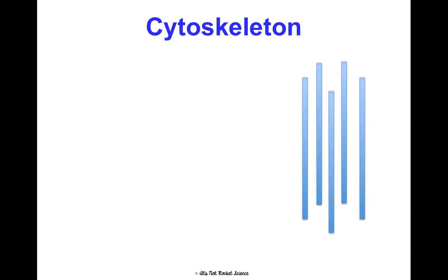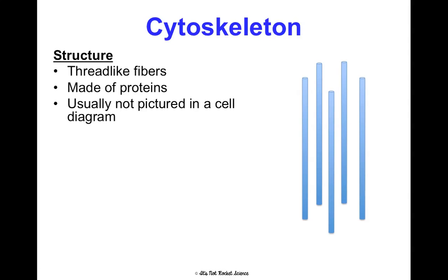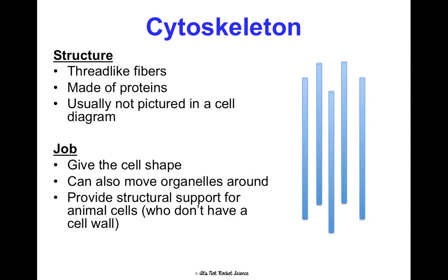Another organelle is the cytoskeleton. It's made of thread-like fibers of protein, and it's usually not pictured in a cell diagram because it would make the diagram look really complicated. Its job is to give the cell shape and structure, and it can also move organelles around. Specifically in animal cells, it provides structural support because animal cells don't have that rigid cell wall like plant cells and bacteria cells do.